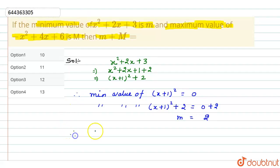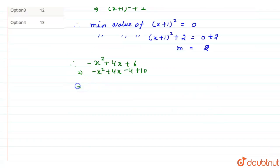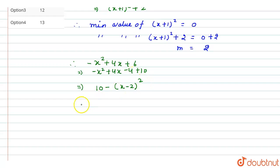Now for the second equation: minus x squared plus 4x plus 6. We rewrite this by completing the square: minus x squared plus 4x minus 4 plus 10, since minus 4 plus 10 gives us plus 6. This gives us minus (x minus 2) whole squared plus 10, since minus (x minus 2) squared expands to minus x squared plus 4x minus 4.